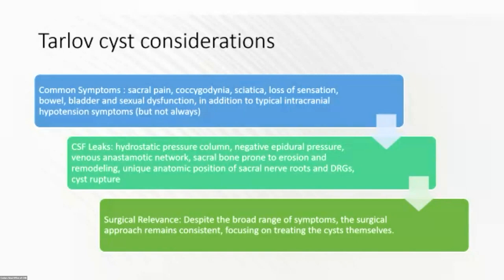Considerations include cauda equina type symptoms, and in some patients, intracranial hypotension symptoms. It's at the lowest end of the pressure column, so you have hydrostatic pressure and a very extensive venous and anastomotic network. The sacral bone can give way and erode — it's not really a weight-supporting part of the sacrum, so the bone doesn't have much resistance. You can have extensive erosion, and the sacral nerve roots and their dorsal root ganglia, elsewhere in the spine they're protected by a bony foramen, but in the sacrum they're all clustered together in the sacral canal. So one cyst can affect multiple nerve roots, or you can have multiple cysts.